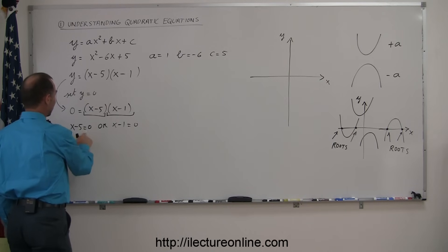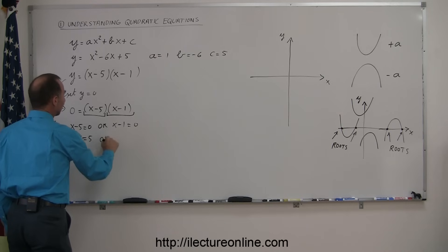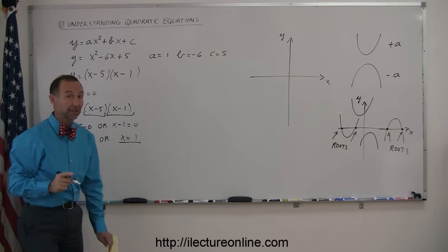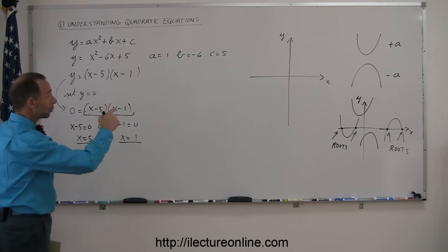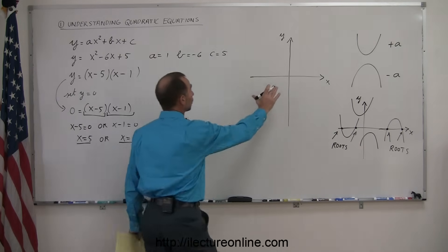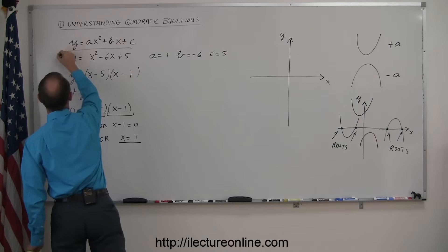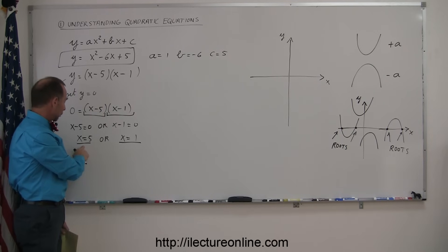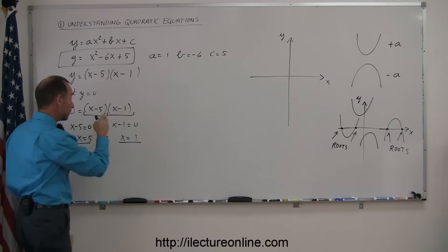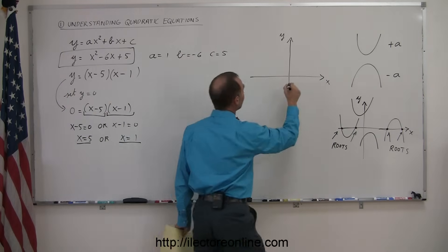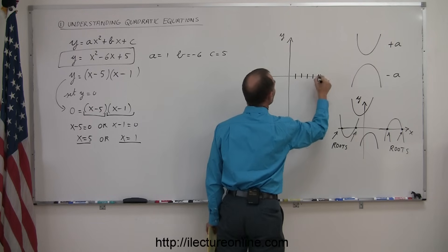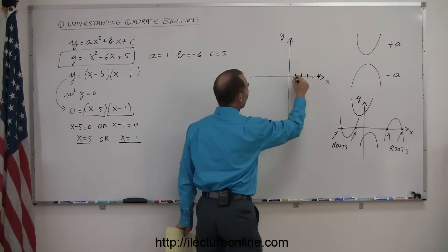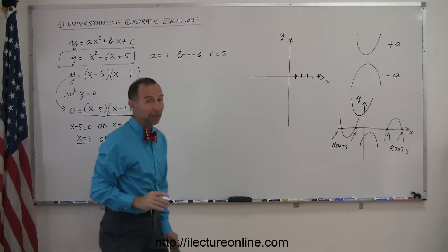If x minus 5 equals 0, then x must equal 5. If x minus 1 equals 0, then x must equal 1. Those are the locations where the parabola will cross the x-axis. So graphing this example on the xy-axis, one root is at x equals 5 and the other is at x equals 1 — those are the two roots of this quadratic equation.